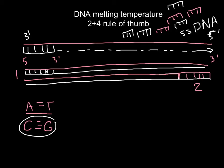In order to calculate our temperature of melting, we use a formula that is called the 2 plus 4 rule of thumb. This is a very basic, simple formula where temperature of melting equals 4 times G plus C, plus 2 times A plus T.